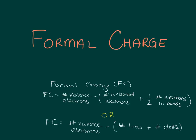There's a simpler way to remember this: formal charge equals the number of valence electrons minus the sum of the number of lines coming off of an atom and the number of dots on an atom.